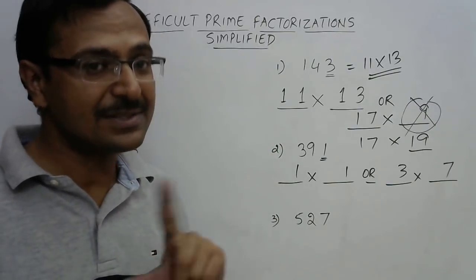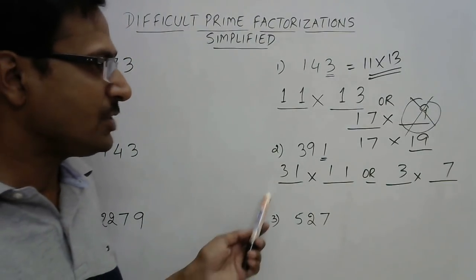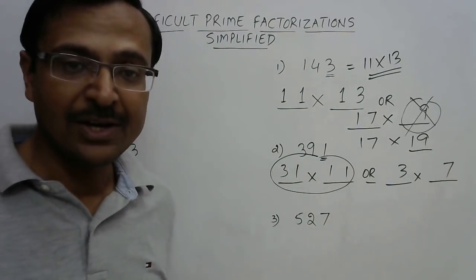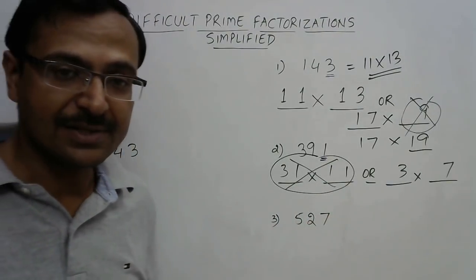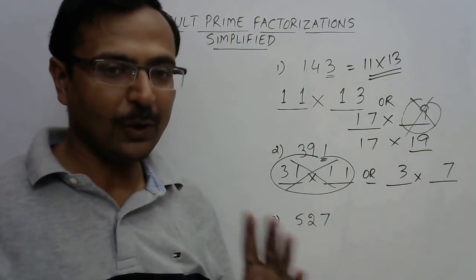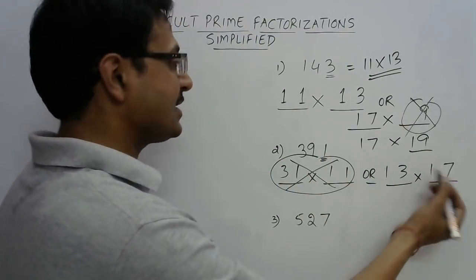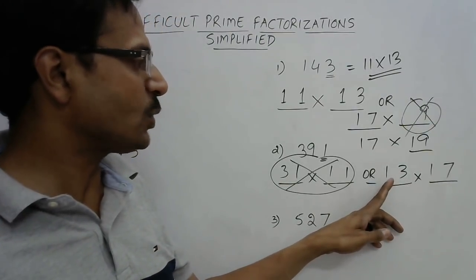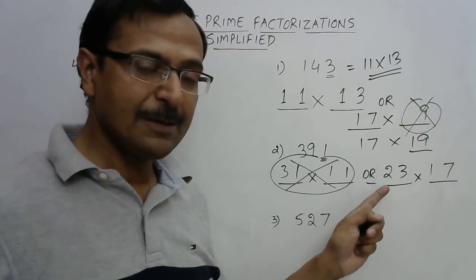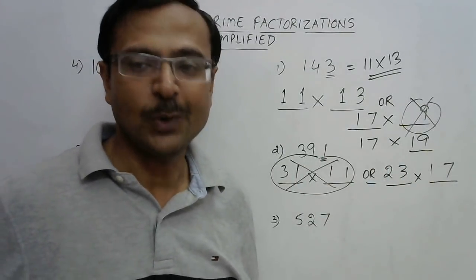Prefixing 3 gives 31 which is prime, and 11 is also prime, but 31 × 11 is not 391. So the option ending with 1 and 1 is ruled out. Moving to 3 and 7: prefix 1 gives 13 and 7, but 13 × 7 is not 391. Try 17 — 17 × 10 = 170, not enough. Increasing to 23: 23 is prime, 17 is prime, and 23 × 17 = 391. That's the prime factorization.